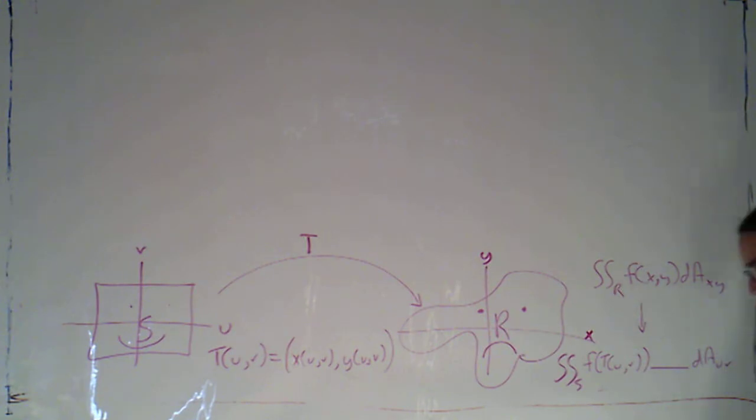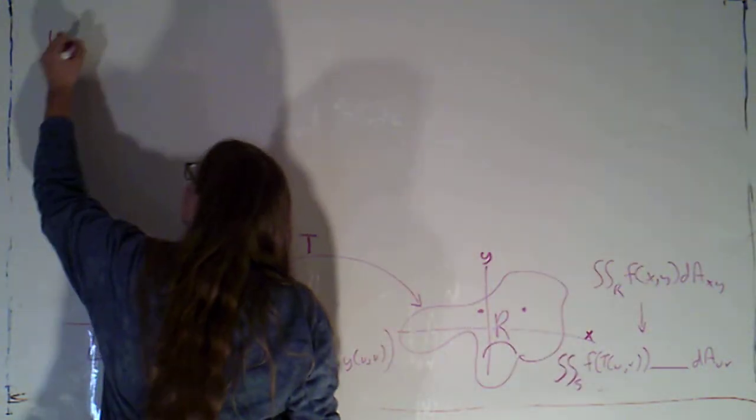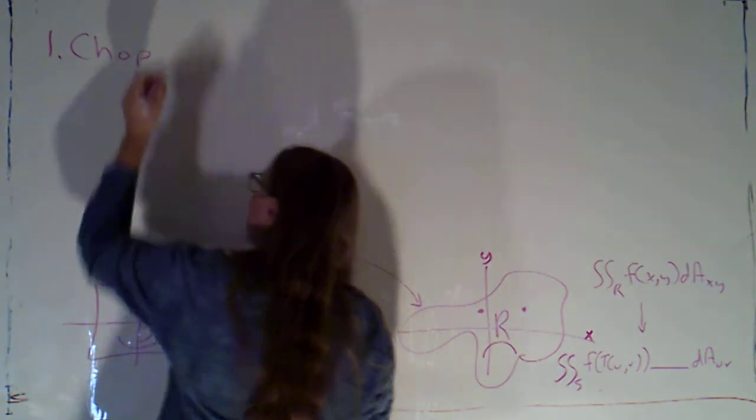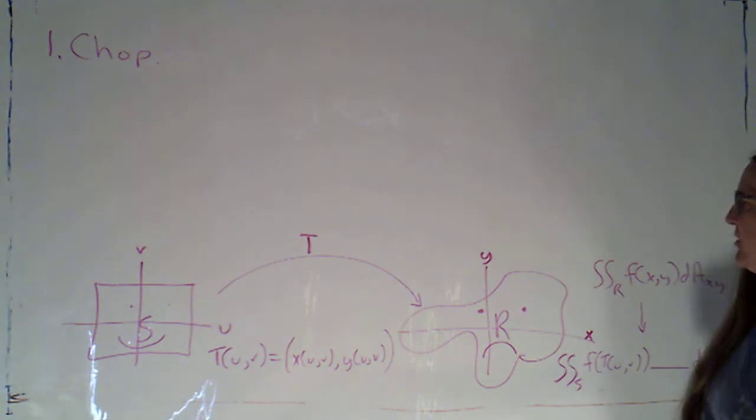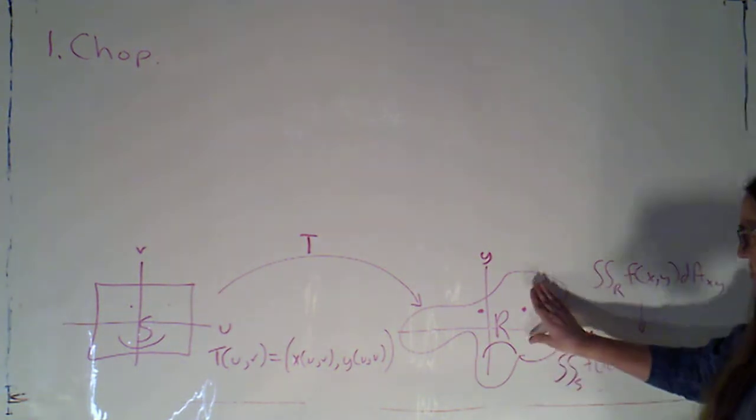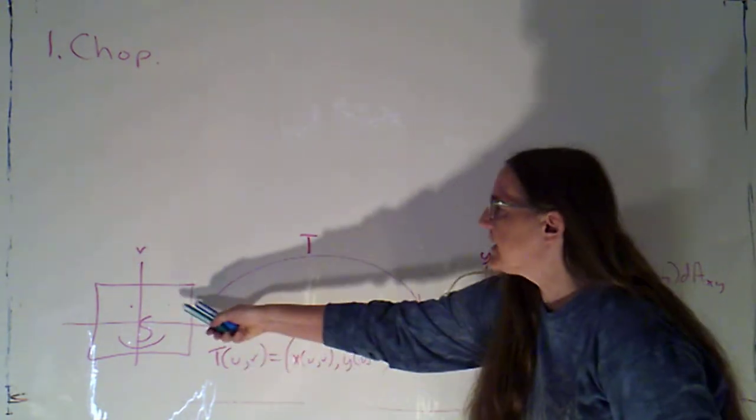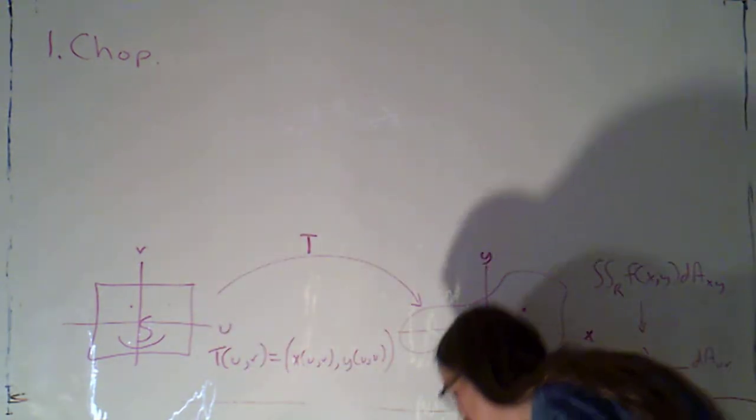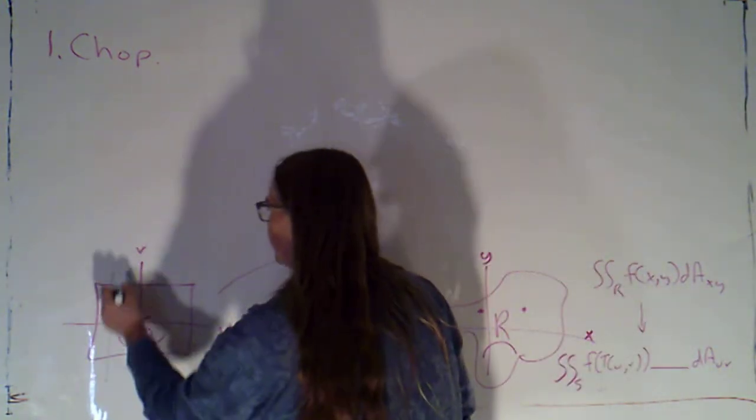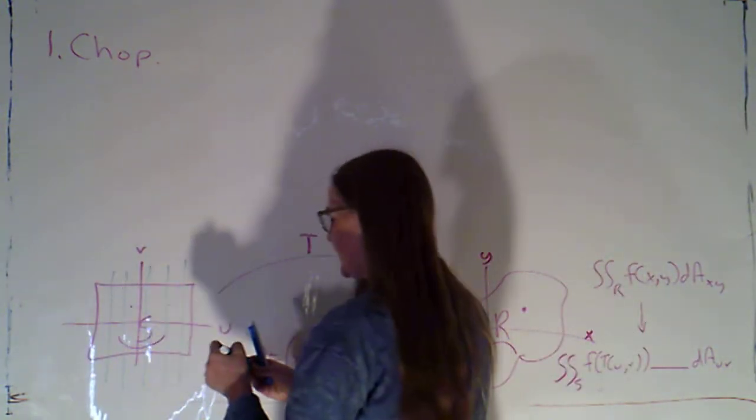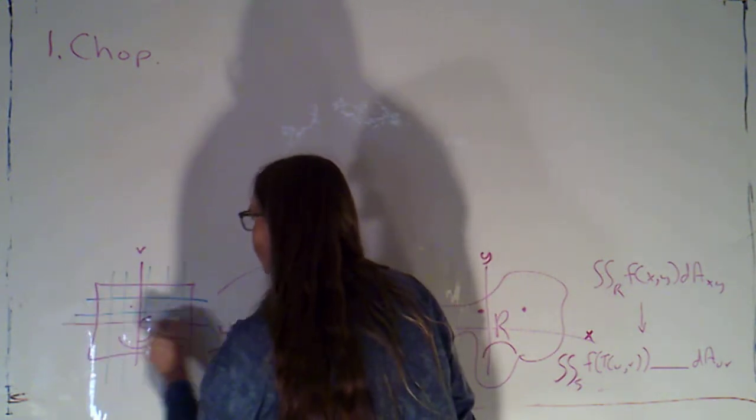So as we try to figure out how this works, we're going to go through our usual four-step process. So I'm going to chop things into little pieces. And the question is, where do I start? Do I start with this region? Or do I start with this region? And the answer is we start here. So I'm going to chop what I'm thinking of as my nice region into nice little pieces.